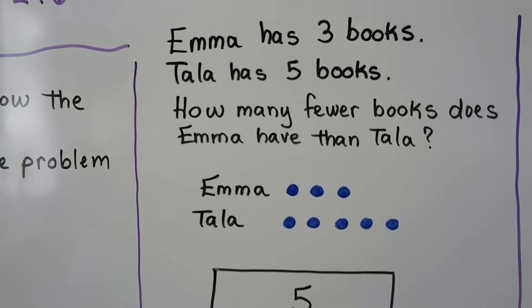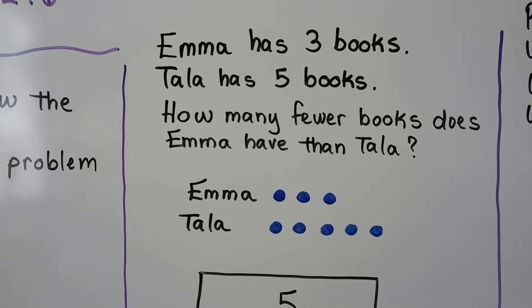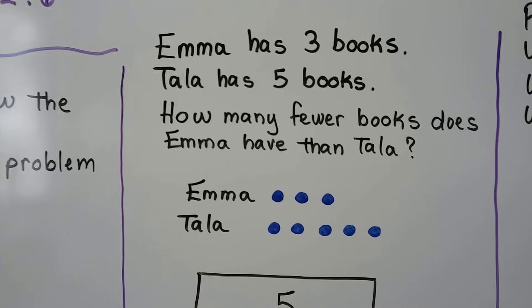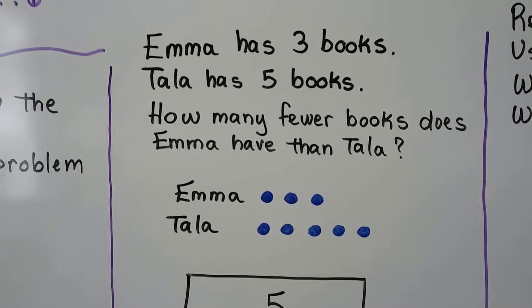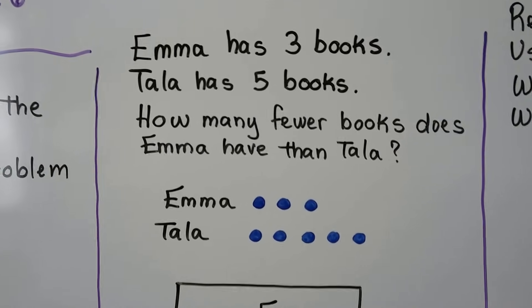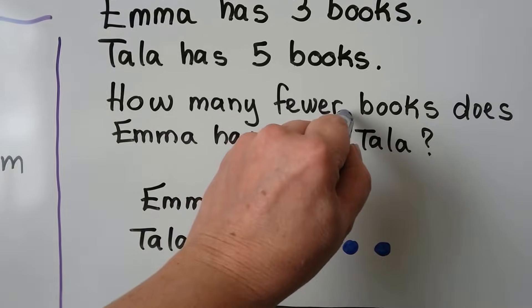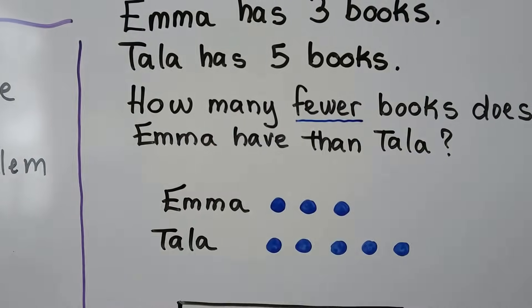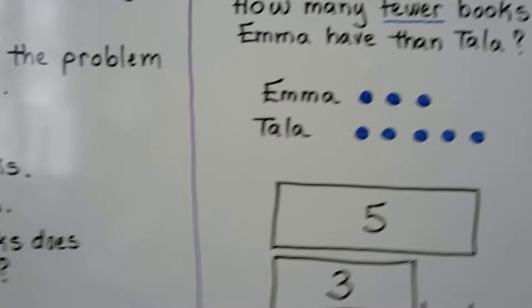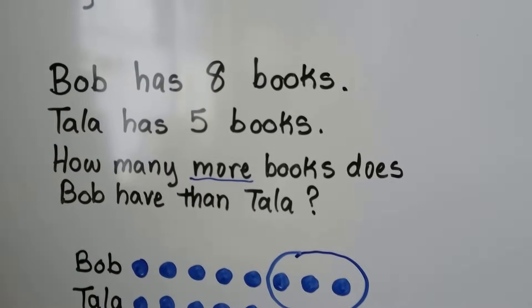Emma has three books. Tala has five books. How many fewer books does Emma have than Tala? Now it's asking about fewer books, whereas the previous problem asked how many more books.